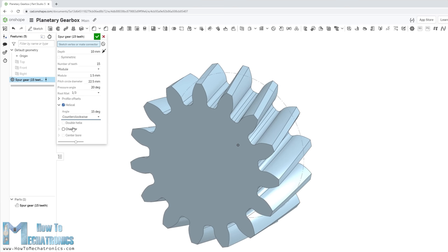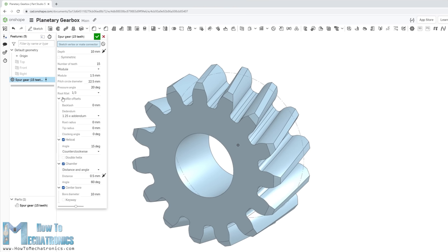We can also choose the gear to be chamfered and have central bore. Under the Profile Offsets menu we can also enter a backlash value. We need to add some backlash because when 3D printing, the parts usually come out a bit bigger. So if we don't add a backlash value here, the gears won't be able to mesh. I did some tests and a value of 0.1mm gave me a good result.